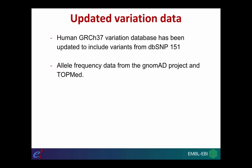The penultimate thing I want to talk about is the updated variation data for human. In Ensembl 94 we updated the GRCh38 variation database to include variants from dbSNP 151. These variants have now been mapped to GRCh37 — the older version of the human genome assembly which is still widely used — so you can now access that data through the GRCh37 archive, including allele frequency data from the gnomAD project and TopMed as well.